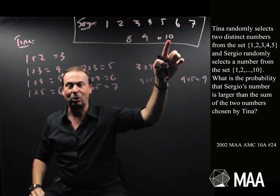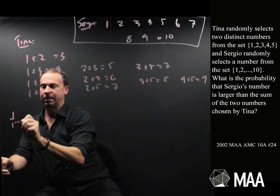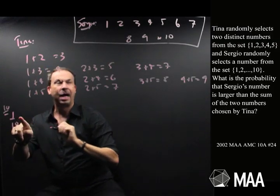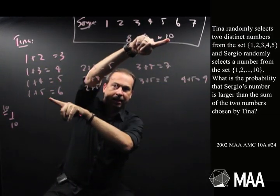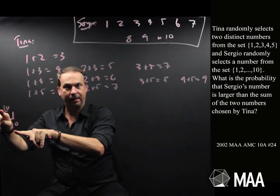One-tenth of the time, Sergio will get a 10. So, one-tenth of the time, he'll get a 10. And if he gets a 10, he is going to beat whatever Tina gets. So, one-tenth of the time, he'll win automatically.